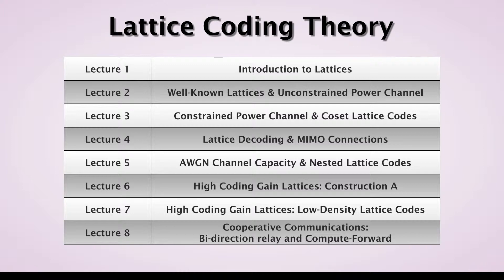Lecture three is we introduce the constrained power and the coset lattice codes which are necessary for the group structure. Lecture four I'll talk about lattice decoding and some connections with MIMO.